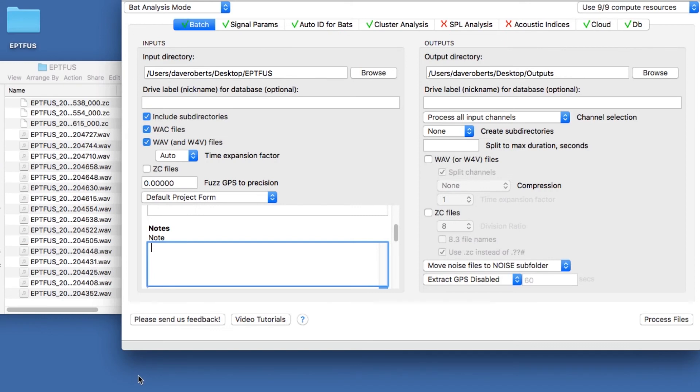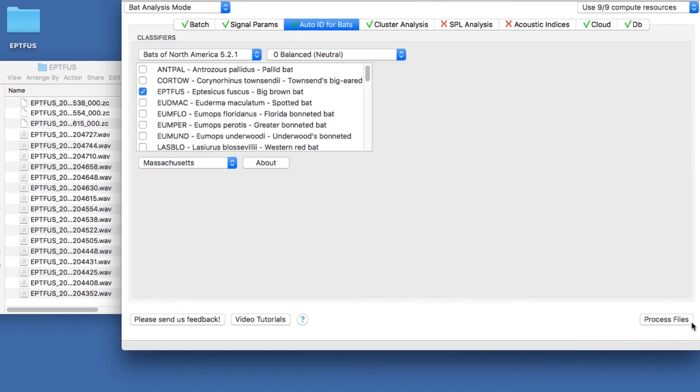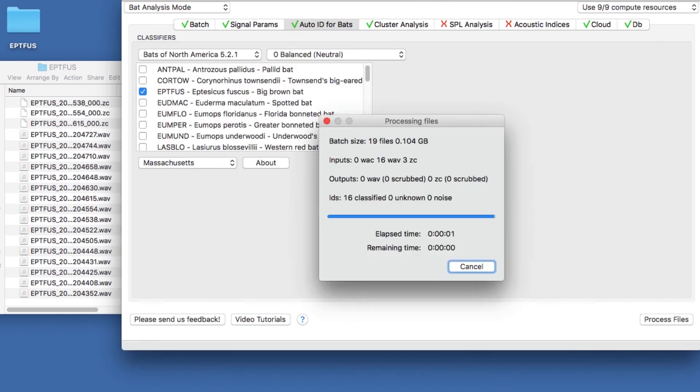Kaleidoscope Pro can run an auto-ID process on both zero crossing and full spectrum files. Zero crossing is an integral part of the auto-ID function.